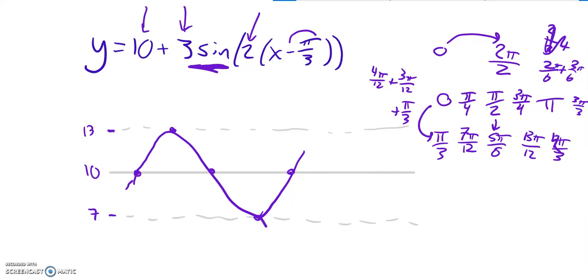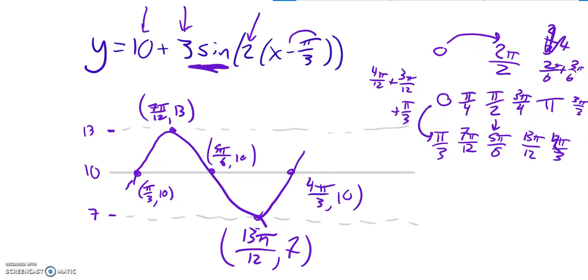So anyways, those are my x values. So this point is at π over 3, 10. And this point is at 7π over 12, 13. This point's at 5π over 6, 10. At a height of 10, this one is going to be at 13π over 12, 7. And this one's back up to that midline, 4π over 3, 10. And there's my sketch of that equation.